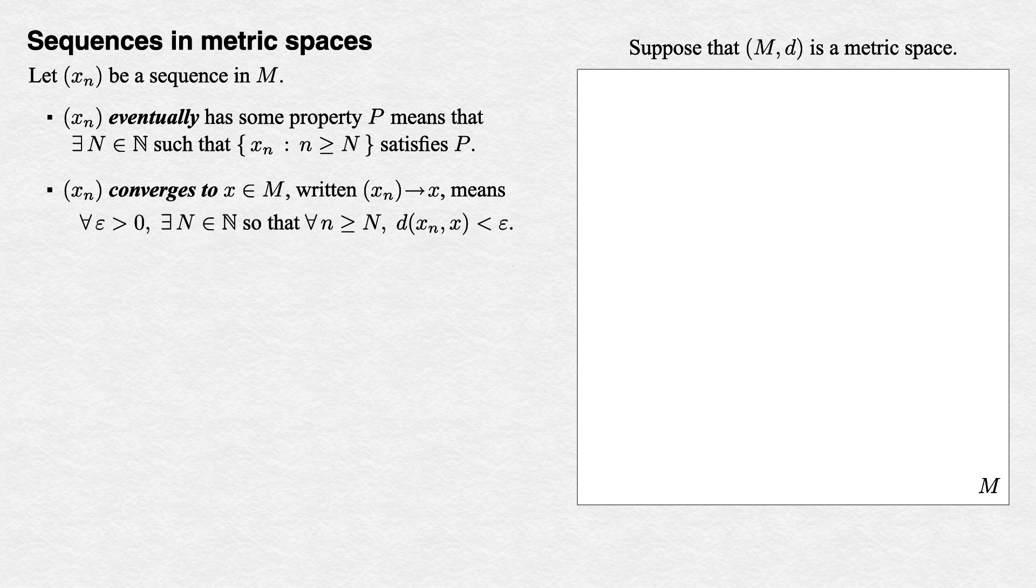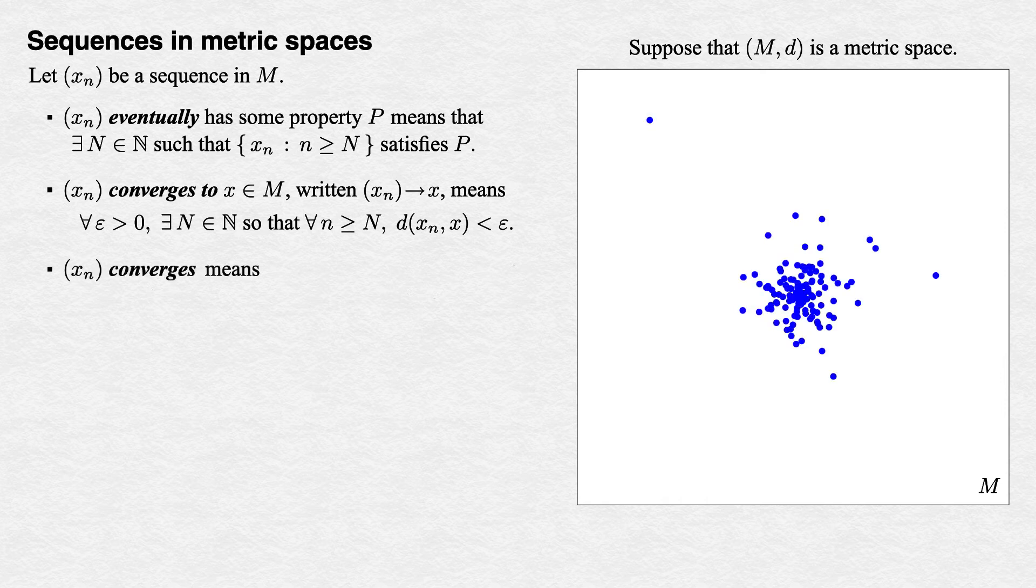We'll finish up our discussion of convergence with two more terms that have exactly the same meaning as they did for sequences of real numbers. A sequence (x_n) converges if there is some point that it converges to. That is, there exists x in M such that (x_n) converges to x.